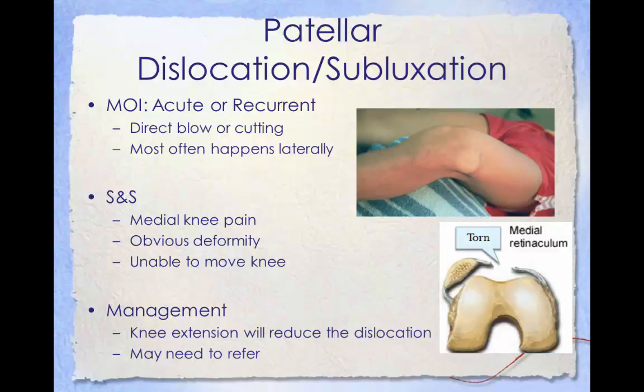Young athletes suffer patella dislocations more commonly than any other group, and the average age of occurrence is between 16 and 20 years of age. Sports commonly associated with this injury involve sudden twisting motions and/or impact, such as soccer, gymnastics, ice hockey, and wrestling. It can also occur when a person trips or slips, especially if that person has a predisposing factor. People often describe the pain as being inside the kneecap, and the leg tends to flex even when relaxed. In some cases, the injured ligaments involved do not allow the leg to flex at all.